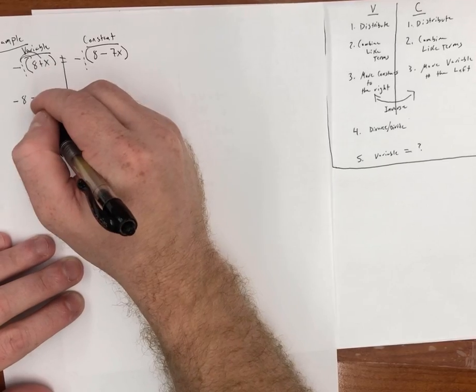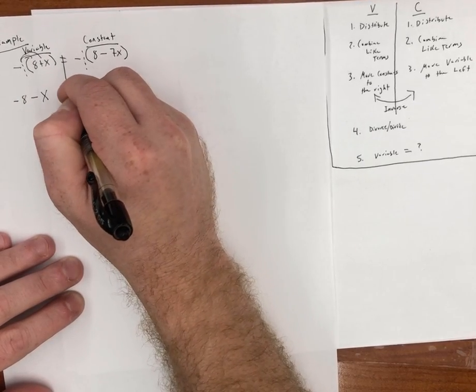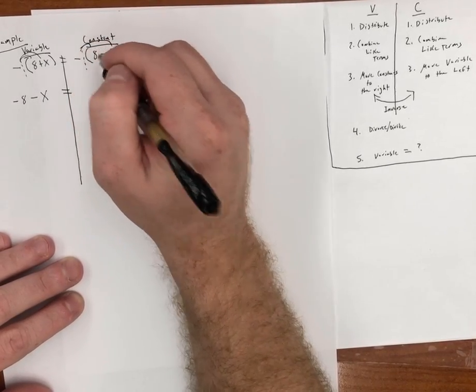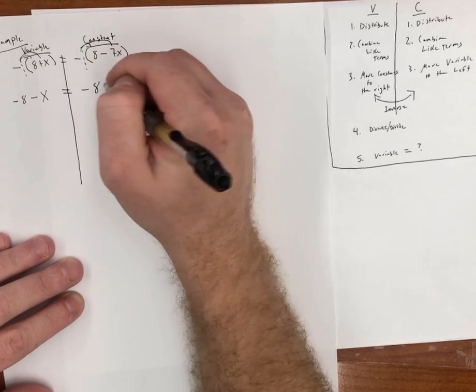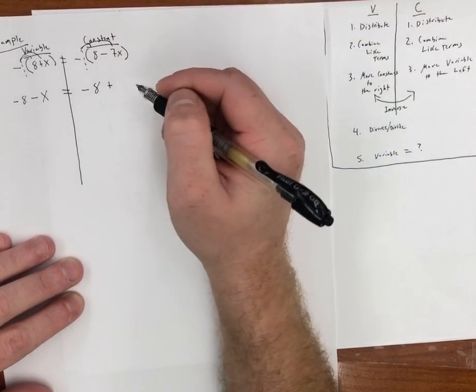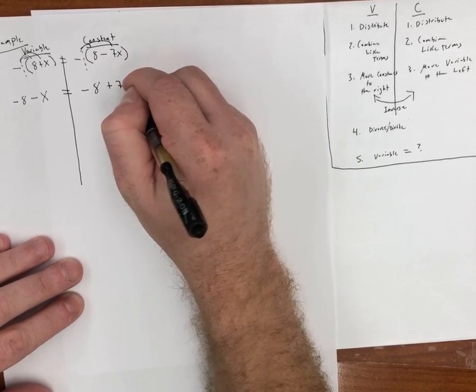Negative times positive gives me a negative. 1 times x, this is going to give me x, is equal to, and again we have to distribute on the right side. I have negative 1 times a positive, so that's going to give me a negative. 1 times 8 is 8. Now here I have a negative times negative, which is going to give me a positive. 1 times 7x gives me positive 7x.